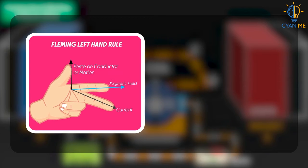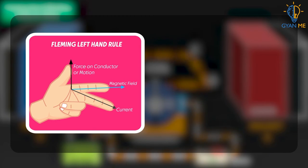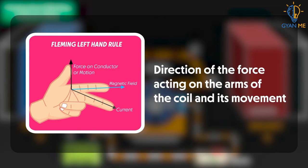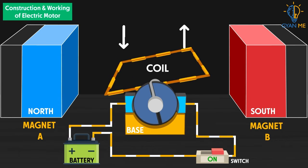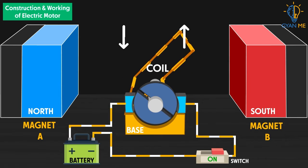Let us apply Fleming's left hand rule to find out the direction of force acting on the arms of the coil and its movement. The current flows from A to B, so the force acting on AB is downwards. Then the current flows from C to D, so the force acting on CD is upwards. Thus the coil and the axle rotate anti-clockwise.